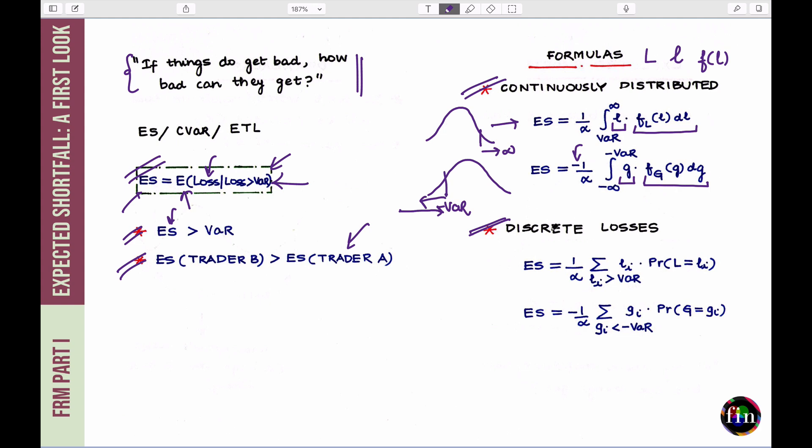Had your losses been discrete losses, then ES would have amounted to 1 by alpha. Instead of using this integral, I would have just done a probability weighted average. That means, take the loss which lies in the tail. That means, it's greater than VAR and probability weighted with the probability that this loss is realized, the probability mass function in this case.